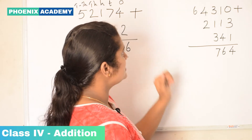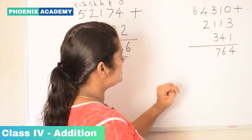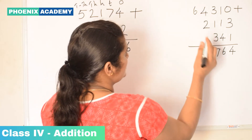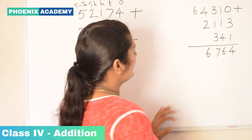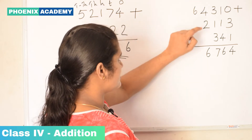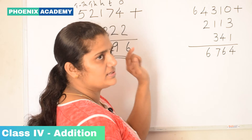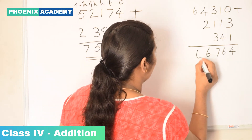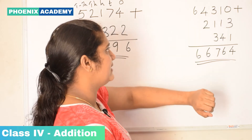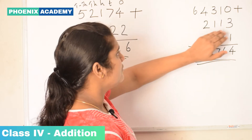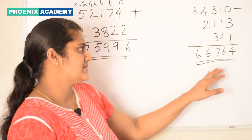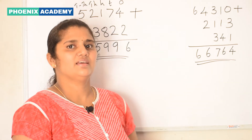Then add the thousands values: 4 plus 2 is 6. We don't have any other values here, so 6. In the ten-thousands place we have only 6. So the sum of 64,310, 2,113, and 341 is 66,764.